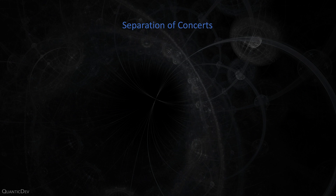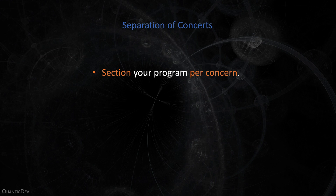6. Separation of Concerns — similar in spirit to the single responsibility principle, but on a broader spectrum. It is the principle of sectioning your program into separate parts so that each part addresses a different concern. Every program has multiple concerns — for instance, getting data from the server, validating that data, and displaying that data to the user.